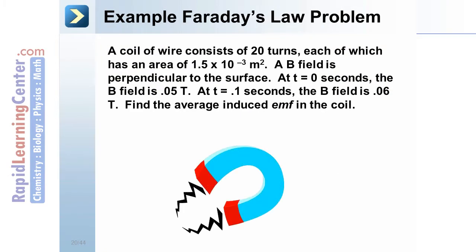For example, Faraday's Law: a coil of wire consists of 20 turns, each with an area of 1.5 times 10 to the negative third meter squared. A B-field is perpendicular to the surface. At time equals zero, the B-field is 0.05 tesla. At time equals 0.1 seconds, the B-field is 0.06 tesla. Calculate the average induced EMF in the coil.